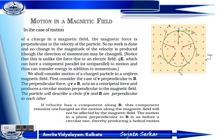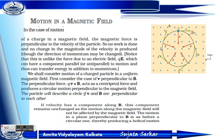Now consider the motion of a charged particle in a uniform magnetic field. V is always perpendicular to B. The perpendicular force is QV cross B. It acts as a centripetal force and produces a circular motion which is perpendicular to the magnetic field, since V and B are always perpendicular to each other.